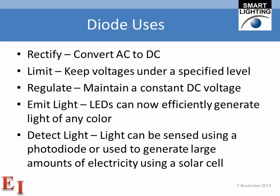You can also use diodes to keep voltages under a specified level — to use them as limiters. If you string a bunch of diodes together so that the forward voltages to turn them on might be like five volts, then any voltage under five volts will pass through, but any voltage over five volts will be clamped and won't be allowed to go any higher. This allows you to provide some kind of protection for your circuit.